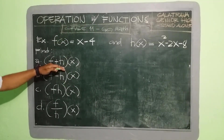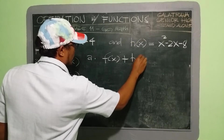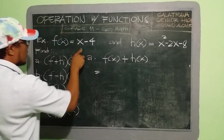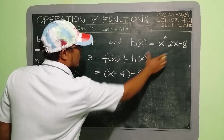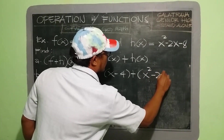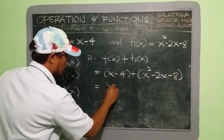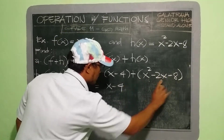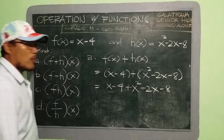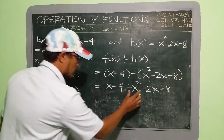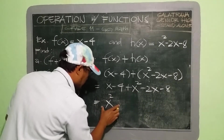Let's find the sum first, letter A. We have f(x) + h(x). That is equivalent to: copy f(x) which is x − 4, plus h(x) which is x² − 2x − 8. We remove the grouping symbols since everything is positive, so we have x − 4 + x² − 2x − 8. Combine like terms and arrange in order. First is our x², and since there is no other x², we bring it down.